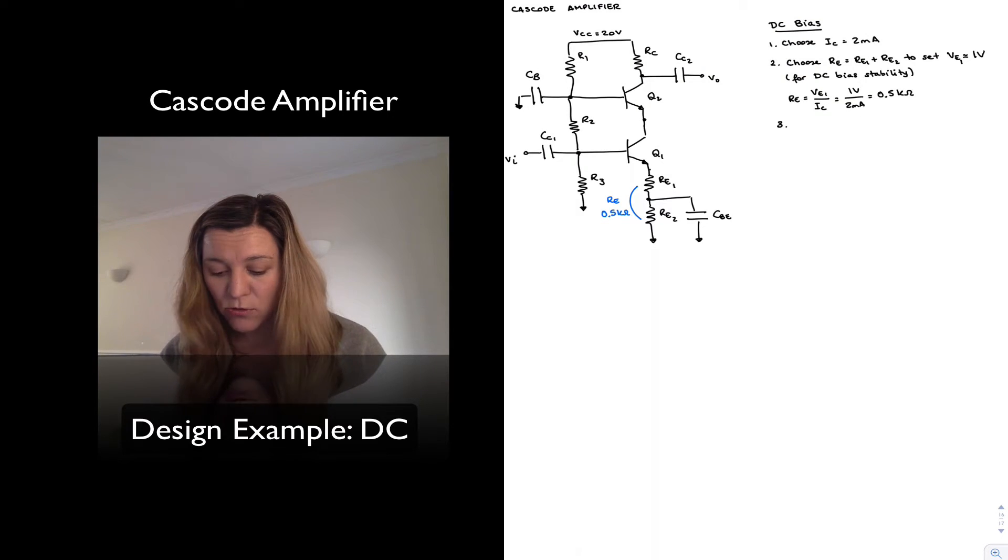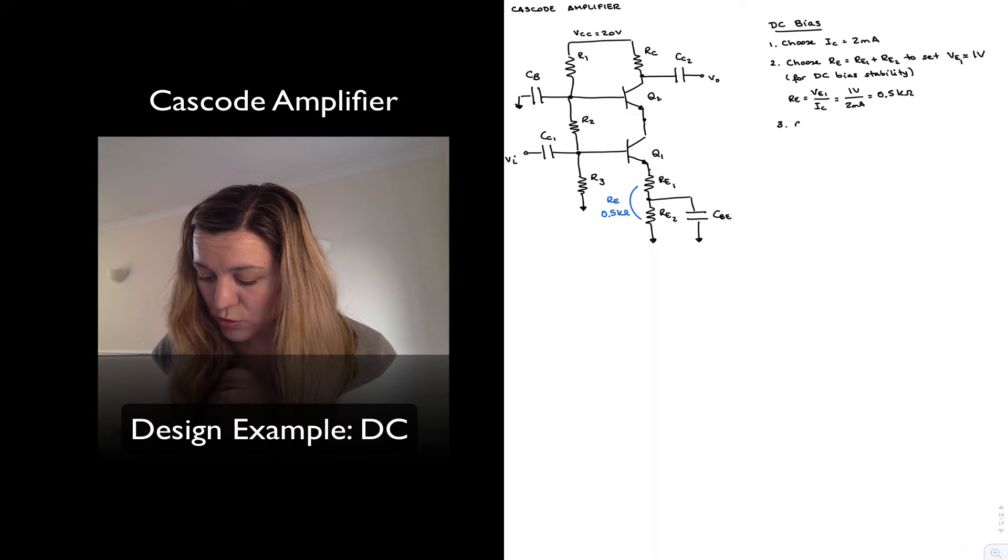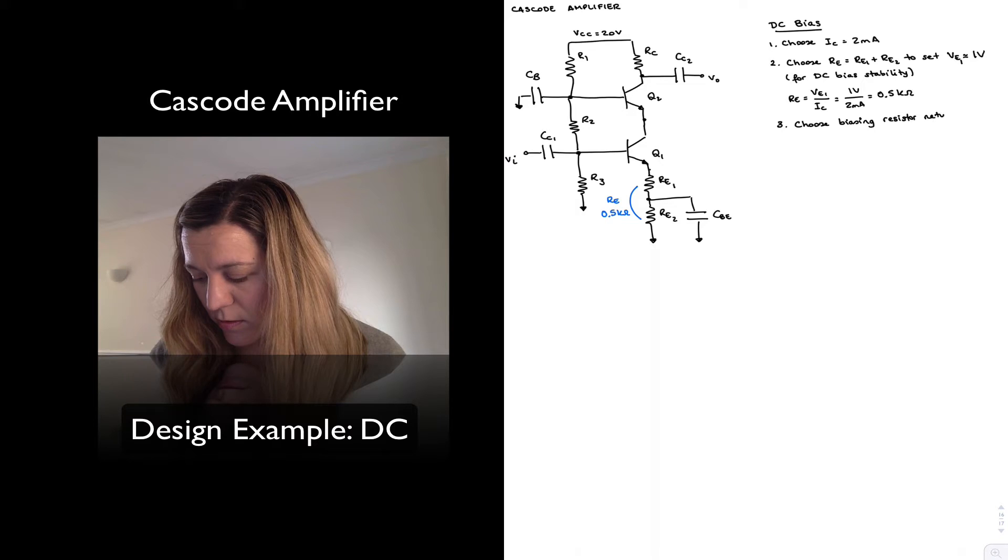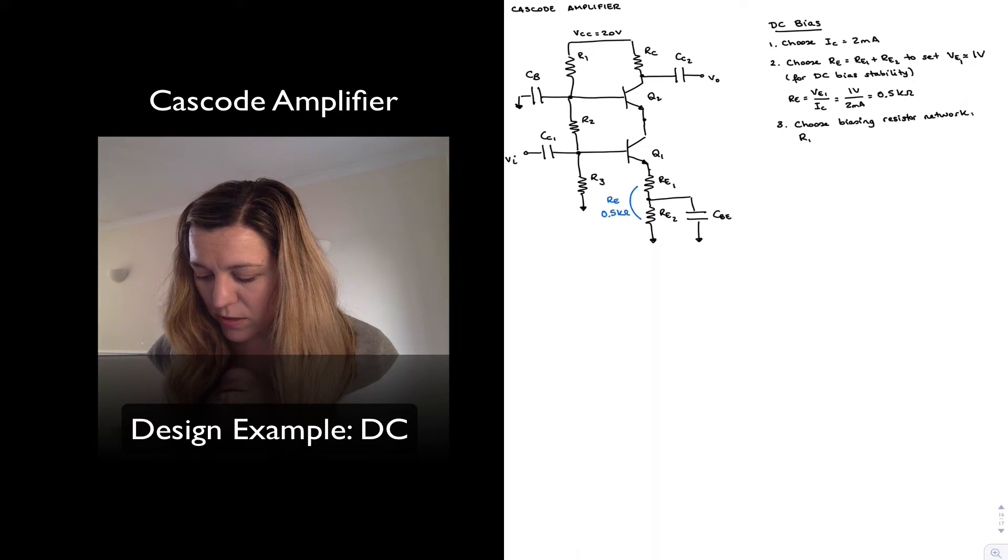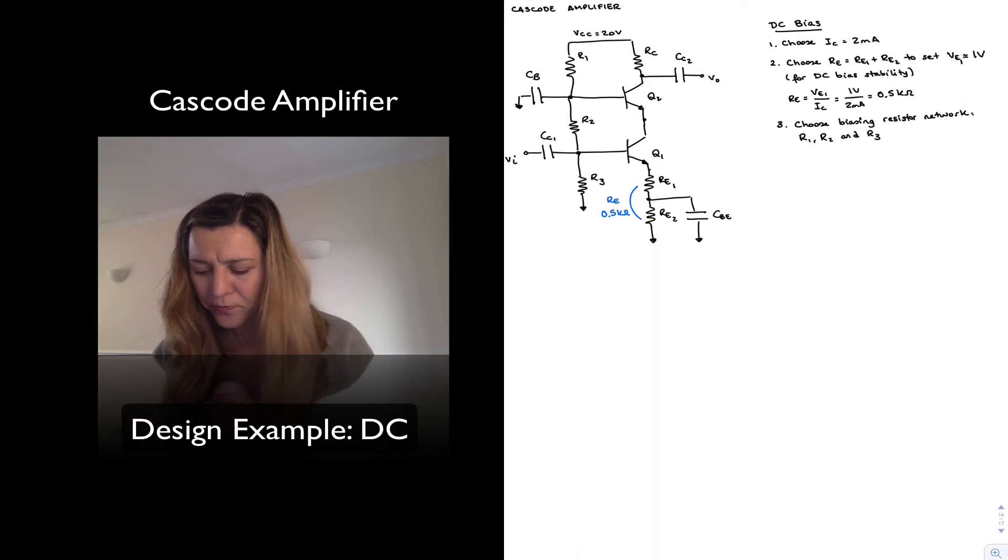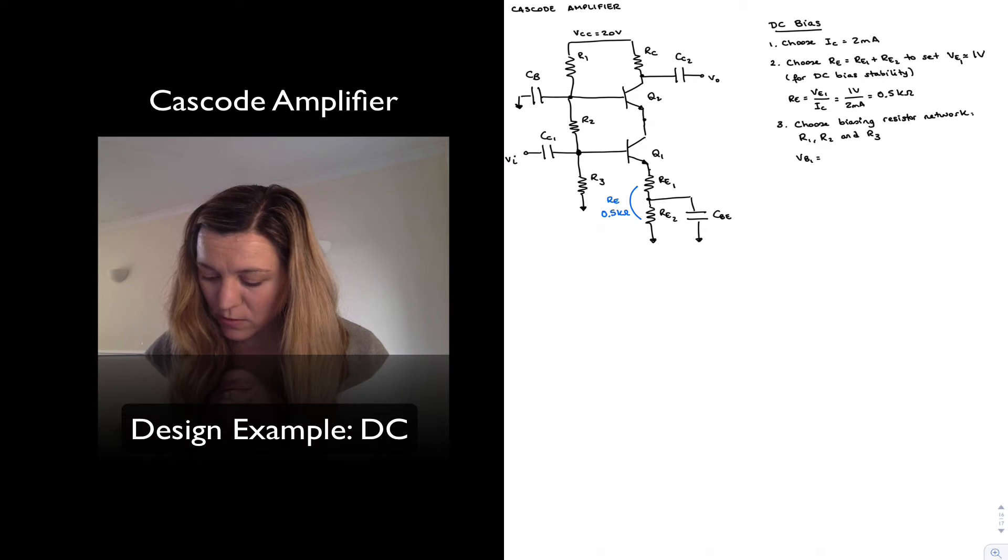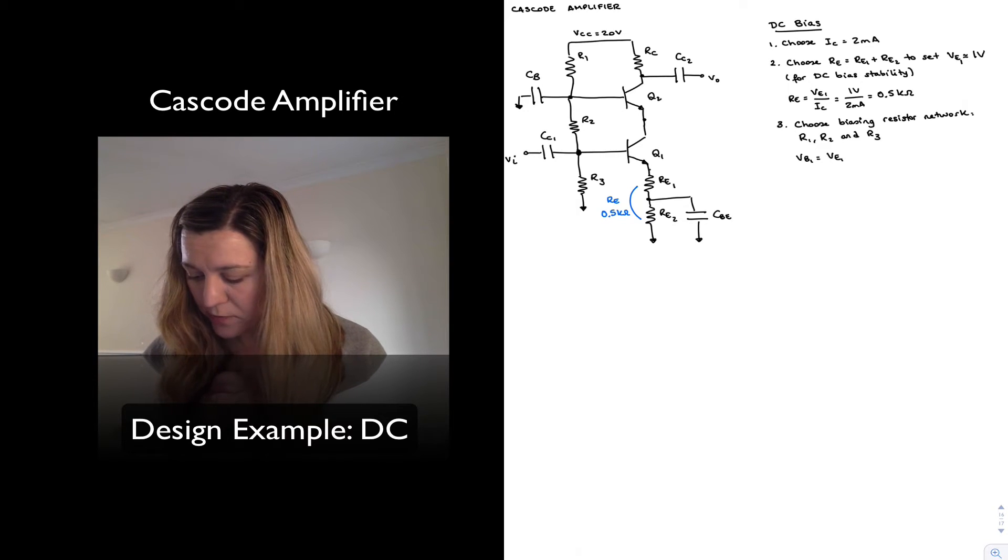I'm going to proceed now to set the biasing resistor network. So choose biasing resistor network, which in this case consists of R1, R2, and R3. Now, notice that we want to set the voltage across R3 to be approximately 1.7 volts because we want to turn on the base-emitter junction for transistor Q1. So I will want VV1 to be equal to VE1, the emitter voltage for the emitter of Q1, plus 0.7 volts to turn on that base-emitter junction. So 1 plus 0.7 volts, that's equal to 1.7 volts.